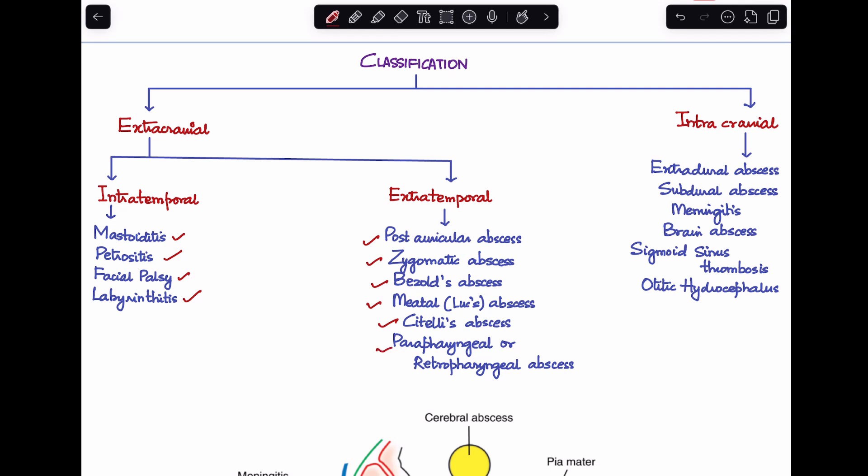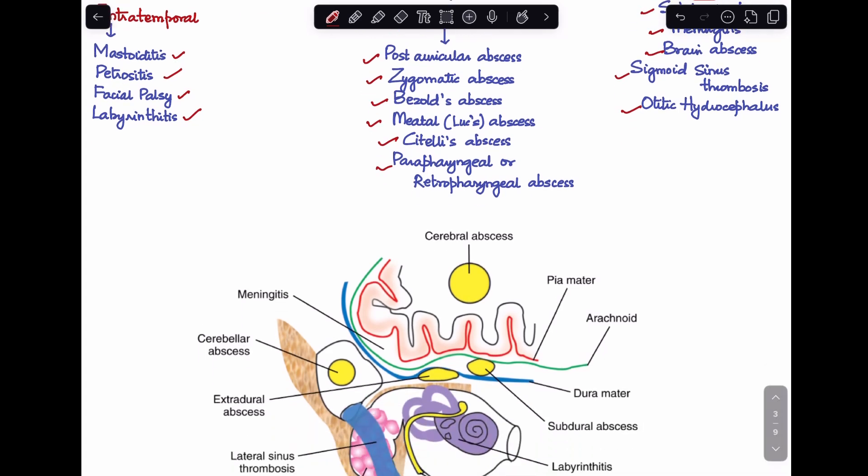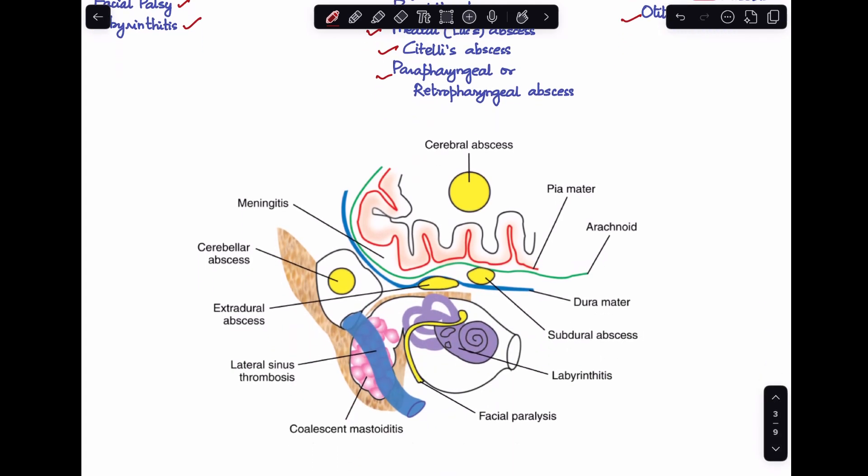Next, the intracranial complications are extradural abscess, subdural abscess, meningitis, brain abscess, sigmoid sinus thrombosis, and otitic hydrocephalus. So these are all the complications of CSOM that we know about. We're going to be discussing each one of them in detail, but today I'll be ending the topic over here. In my next class, I'll be discussing all the extracranial complications of CSOM under the divisions of extratemporal and intratemporal complications.